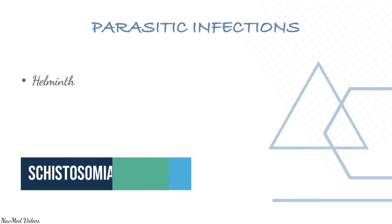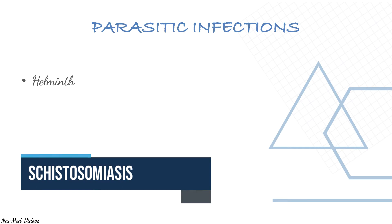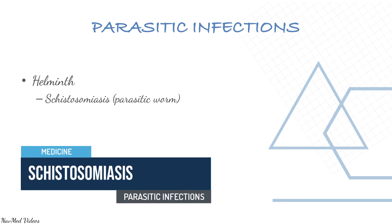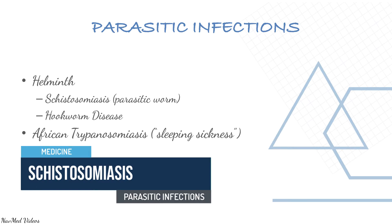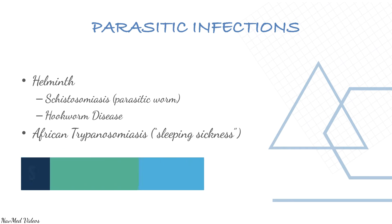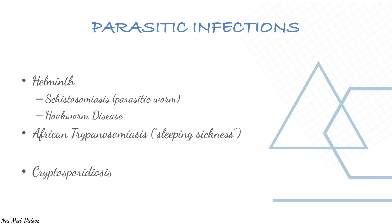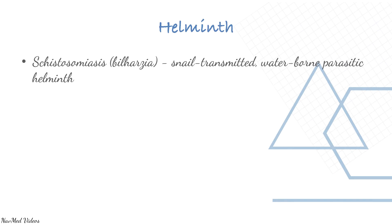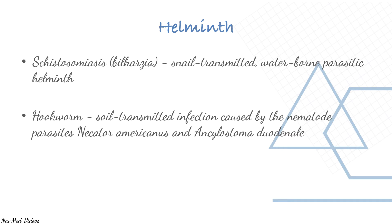We are looking at common parasitic infections which include helminths like schistosomiasis, hookworm disease, African trypanosomiasis or sleeping sickness, and cryptosporidiasis. Schistosomiasis, also known as bilharzia, is a snail-transmitted waterborne parasitic helminth. Hookworm is a soil-transmitted infection caused by nematode parasites.